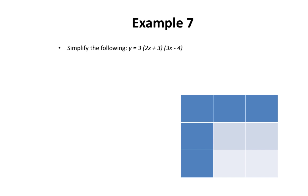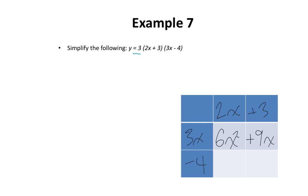In our last example, we want to simplify: y equals 3 multiplied by 2x plus 3 multiplied by 3x minus 4. Again, there's a number in front of the binomials — we'll deal with it after. Writing the binomials into the chart: 2x and positive 3, and 3x and negative 4. Multiplying: 3x times 2x is 6x squared, 3x times positive 3 is positive 9x, negative 4 times 2x is negative 8x, and negative 4 times positive 3 is negative 12.